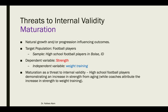The next threat to internal validity is maturation, defined as natural growth and/or progression influencing outcomes. Same target population — football players, with the sample being high school football players in Boise, Idaho. The dependent variable is strength and the independent variable is weight training. Maturation as a threat would be where high school football players demonstrate an increase in strength from aging from one year to the next, while coaches attribute the increase in strength to weight training. We know that at that particular age group, players tend to get stronger whether they're working out or not, just because of biology.